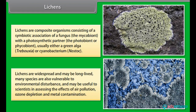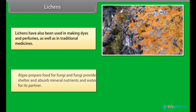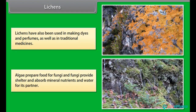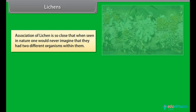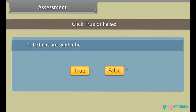Lichens are widespread and may be long-lived. Many species are also vulnerable to environmental disturbance and may be useful to scientists in assessing the effects of air pollution, ozone depletion and metal contamination. Lichens have also been used in making dyes and perfumes as well as in traditional medicines. Algae prepare food for fungi, and fungi provide shelter and absorb mineral nutrients and water for their partner. The association of lichen is so close that when seen in nature, one would never imagine that they had two different organisms within them. Lichens are very good pollution indicators — they do not grow in polluted areas.